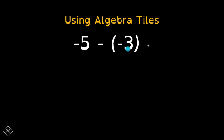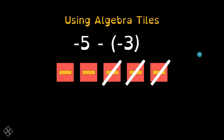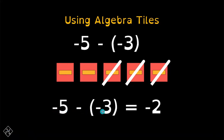Using algebra tiles, let us perform negative 5 minus negative 3. Una, alamin muna natin yung integers: we have negative 5 and the subtrahend negative 3. First, magpapakita tayo ng limang negative tiles. Then, magsusubtract tayo or mag-aalis tayo ng tatlong negative tiles — inalis natin itong tatlo. Aalamin natin kung ilan ang natira: 1 and 2 — and these are negative tiles. Therefore, we have negative 2 remaining. Negative 5 minus negative 3 is equal to negative 2.